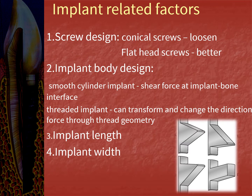Implant-related factors: the screw design — conical screws tend to loosen, so it is better to use flat head screws. The implant body design — smooth cylinder implants produce shear forces at the implant-bone interface, whereas threaded implants can transform and redirect force to the thread geometry. Tapered designs do not engage bone as well as parallel ones, reducing initial fixation. Thread geometry types include V-shaped, square, and reverse buttress designs; square threads show better resistance to torque forces. Increasing implant length and width increases surface area and enhances osseointegration.